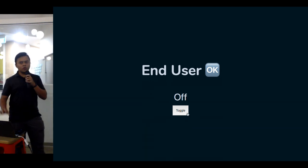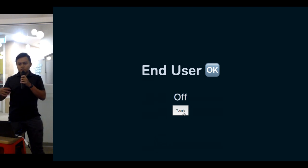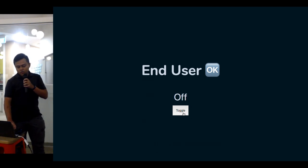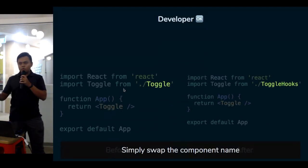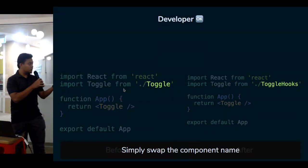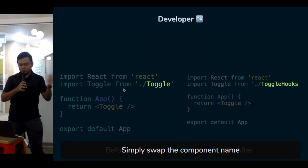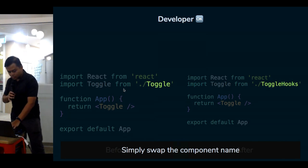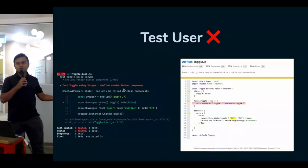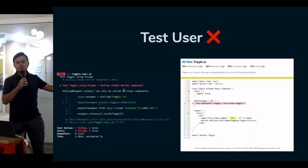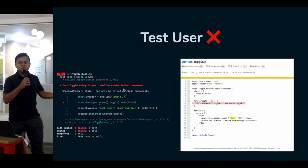When we swap those components, the end user feels fine with it, and the developer doesn't have to change anything other than swapping the file from class to hooks. But then the test user complains about it — it reports a failure, which is actually a false negative.